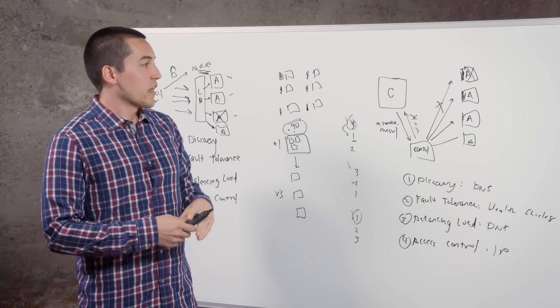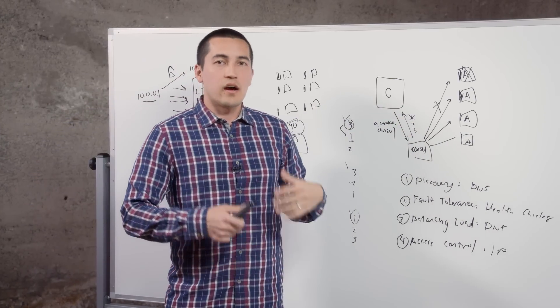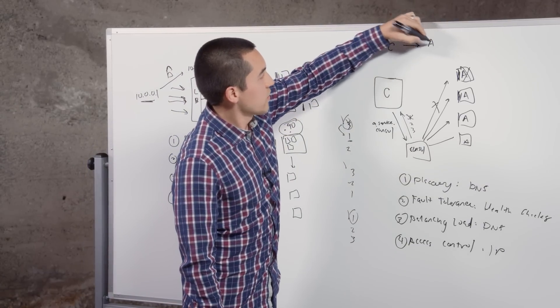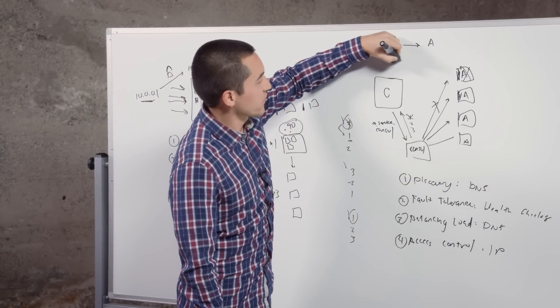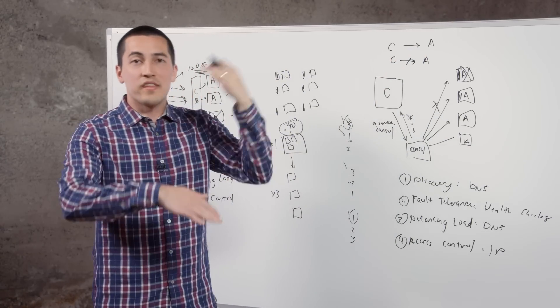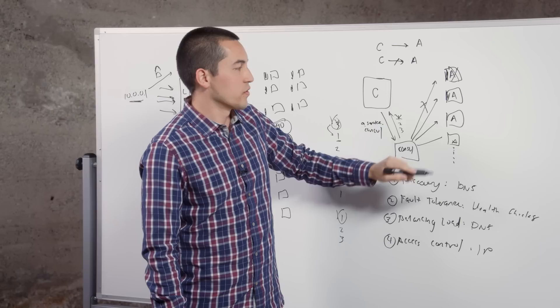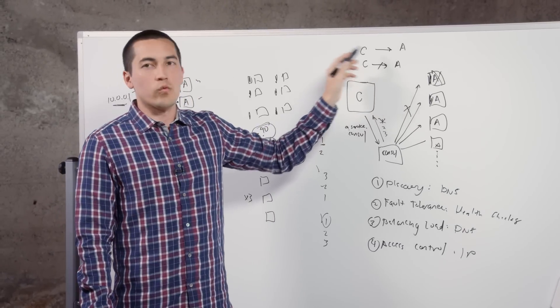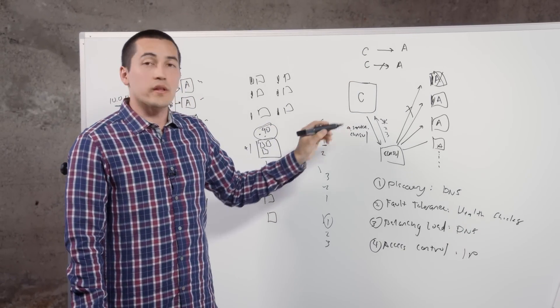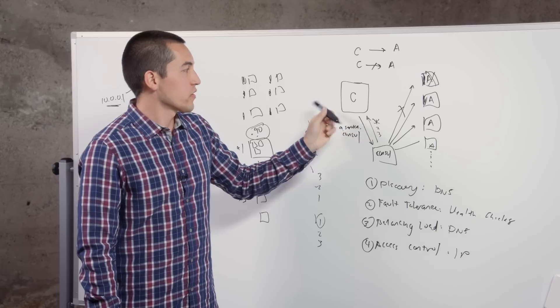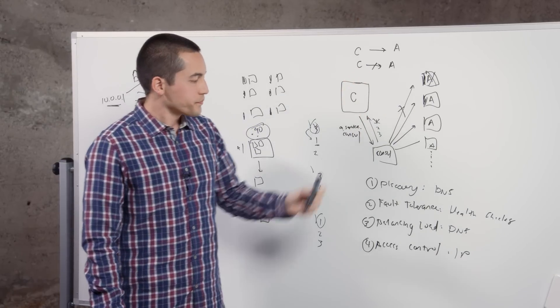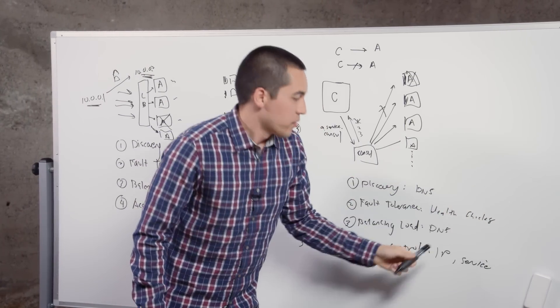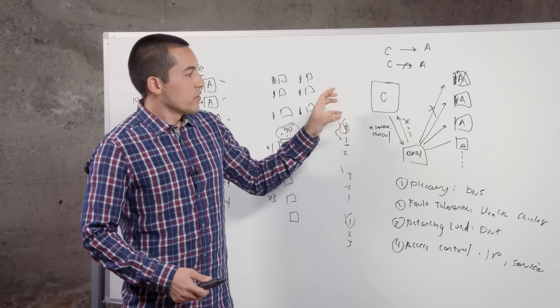And then as another option, there's a feature in Consul called Connect which allows you to do service-to-service authorization. Then you could actually represent rules like C can talk to A or C cannot talk to A, and you represent them at this high level. So it doesn't matter what number of servers you're introducing here—you could have four, you could have 400, you could have any number of clients—but it's always one rule. This makes it really easy and powerful to scale because Consul will make sure that any sort of access is represented by these rules. So you have both IP-based and service-based security.